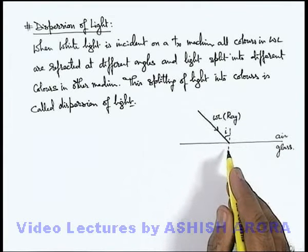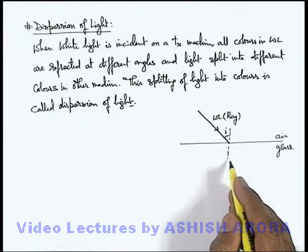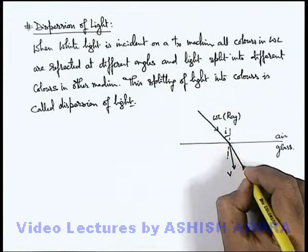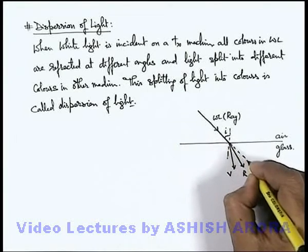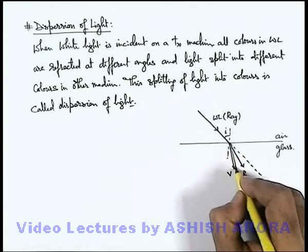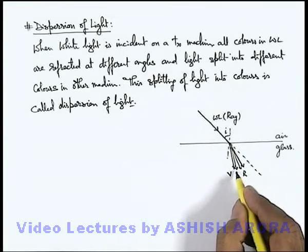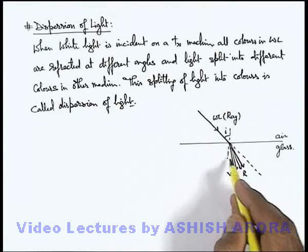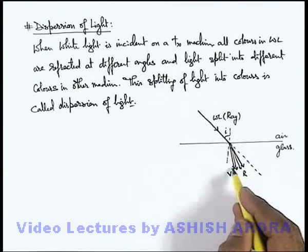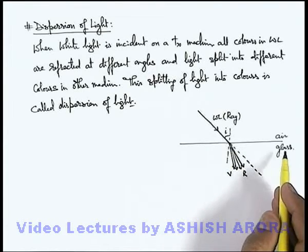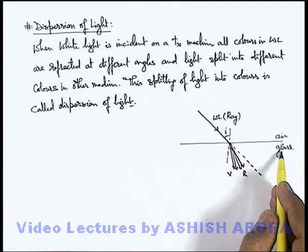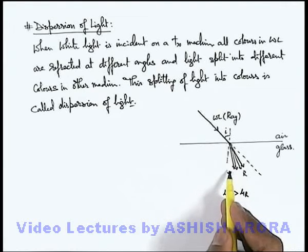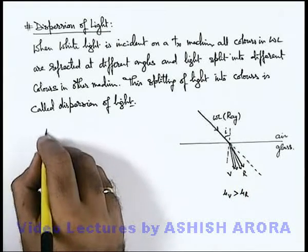But as we know, violet light has the highest refractive index compared to other colors, so violet light will bend maximum, and red light will bend least. From the original direction of light, other colors will also bend at different angles. So this will be the complete spectrum, which we can call VIBGYOR — all colors will split at different angles because the refractive index of different colors, particularly for the glass medium, is different.